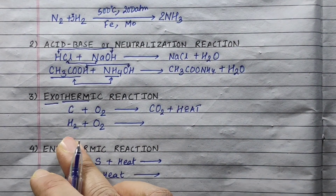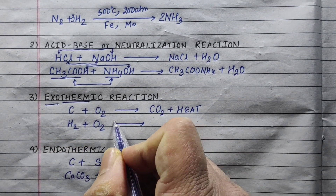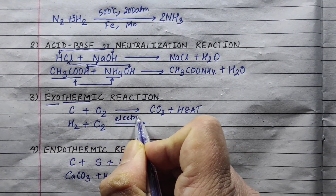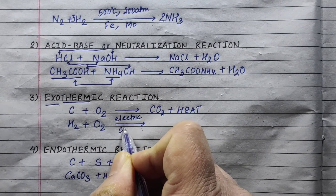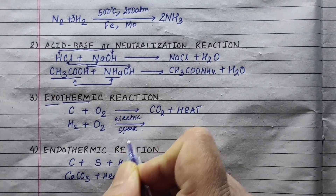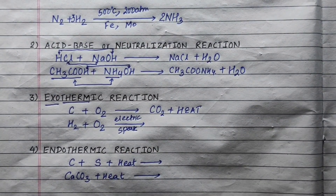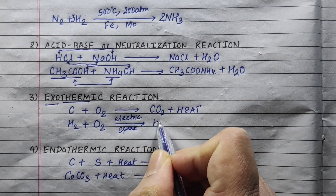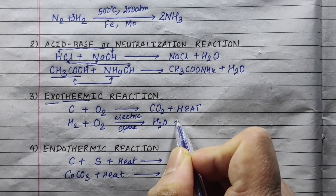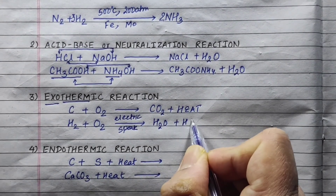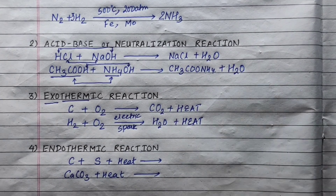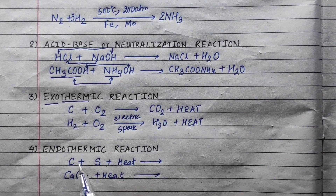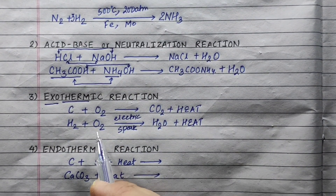Now, hydrogen plus oxygen — with an electric spark — gives water plus heat. So the exothermic reaction releases heat along with the products. Let's balance it: 2H₂ + O₂ → 2H₂O + heat, with an electric spark along with the product side.